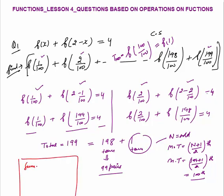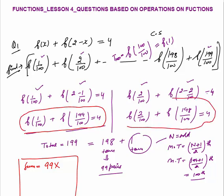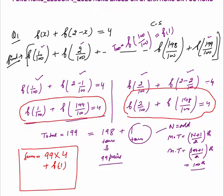The sum of all terms: we have 99 pairs, each with a sum of 4. The first and last terms pair to 4, the second and second-last also pair to 4. So 99 × 4 comes from the pairs, plus the middle term f(1). Now the important part is finding the value of f(1).